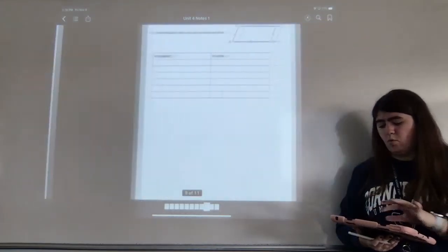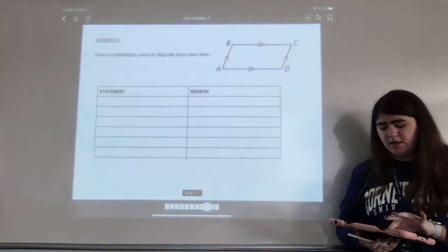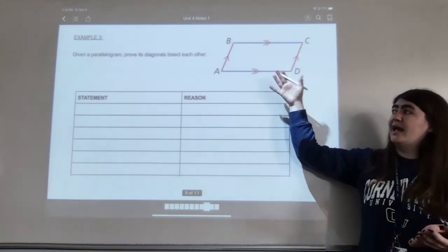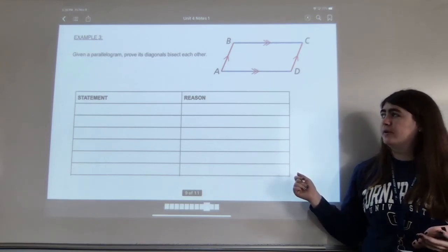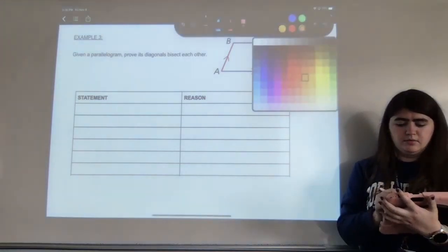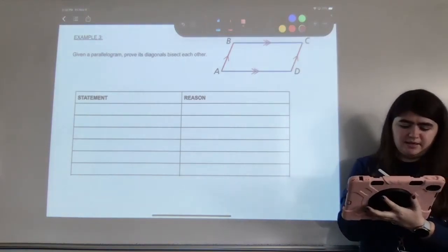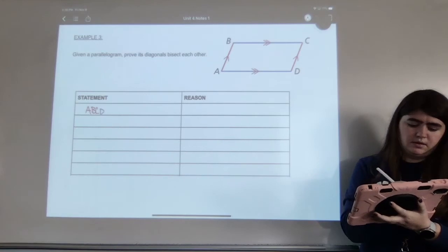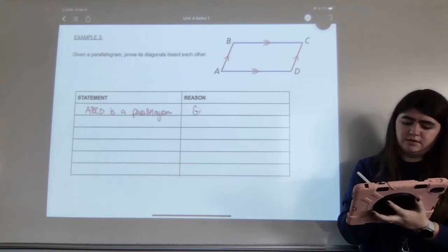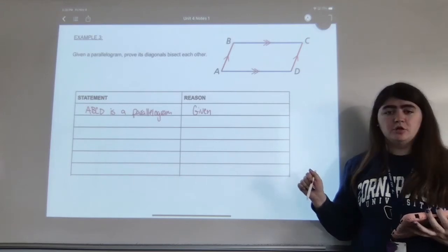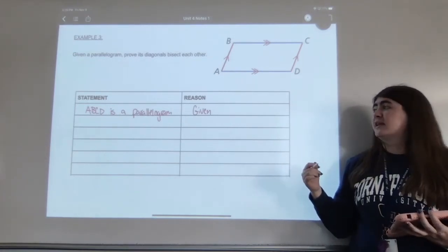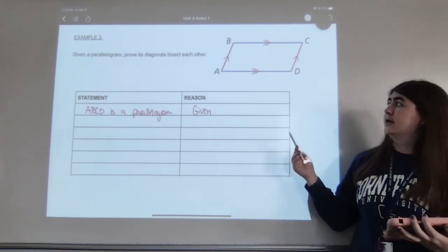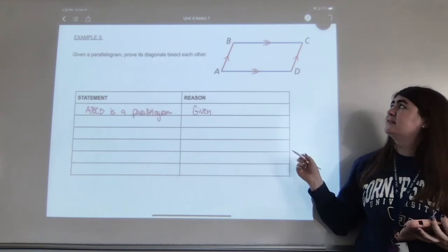We have one more proof to look at. This proof asks us to prove that the diagonals of a parallelogram bisect each other. It starts the same way — line one: ABCD is a parallelogram, because it is given. This time we do need to state the parallel sides, so line two: AB is parallel to DC, and BC is parallel to AD, and AB is congruent to DC, and BC is congruent to AD — all by the definition of a parallelogram.